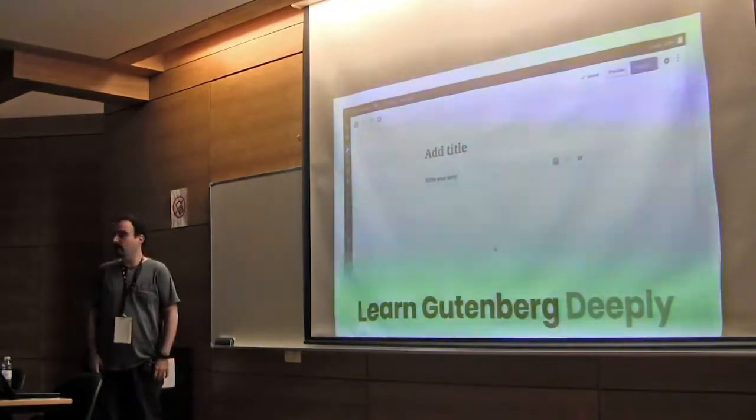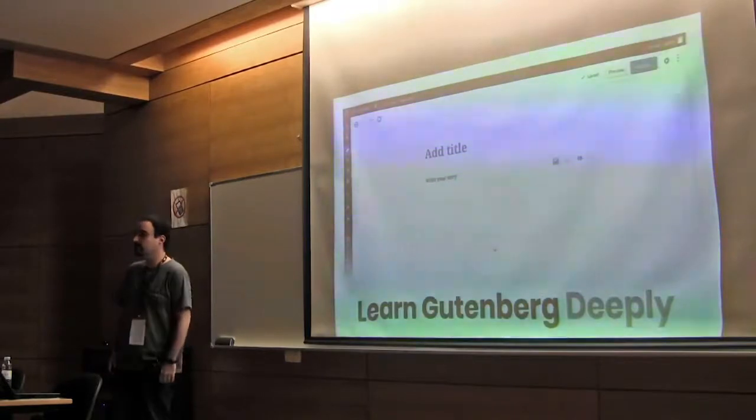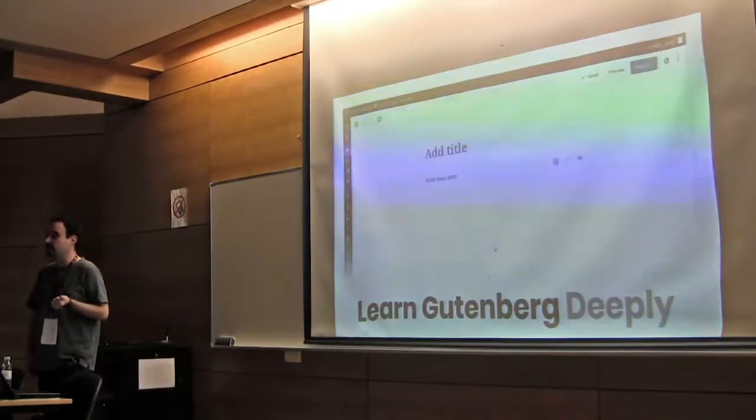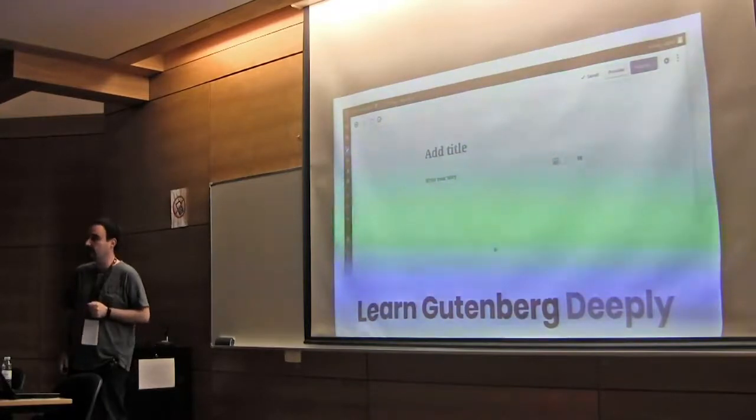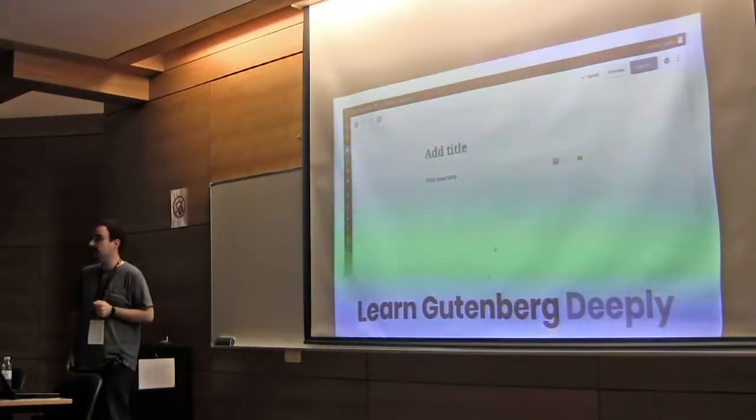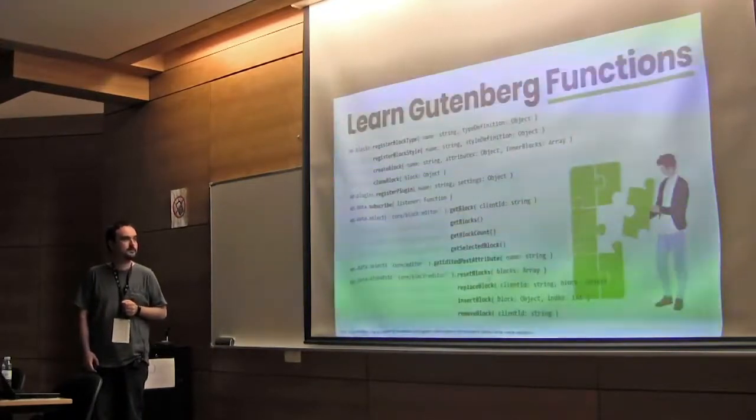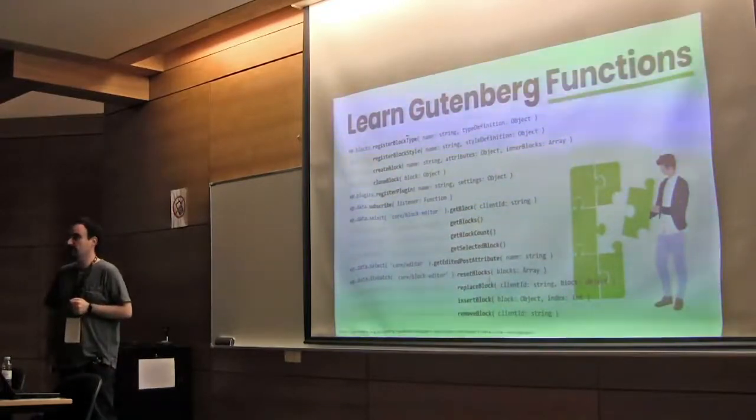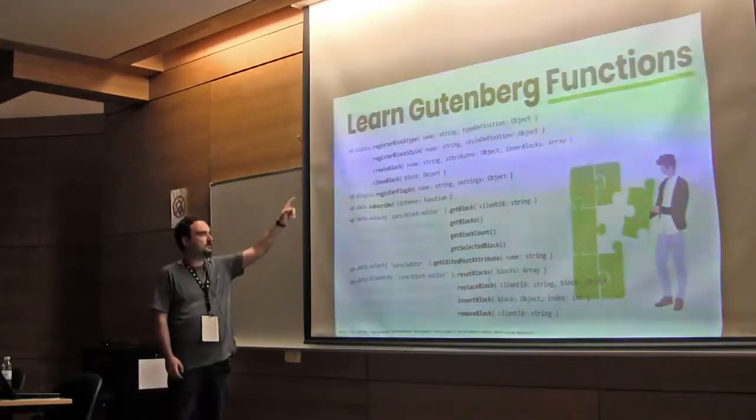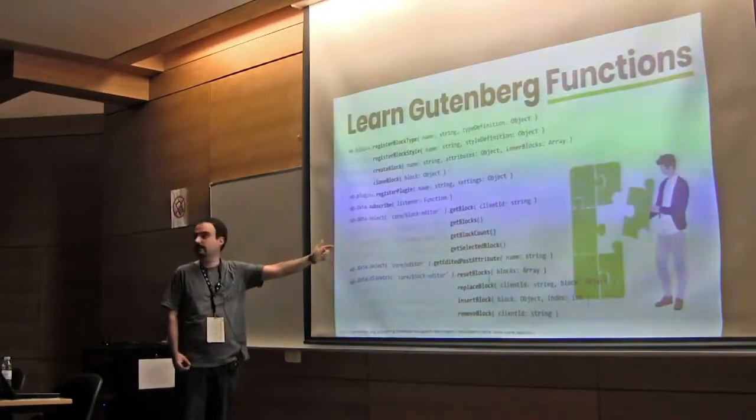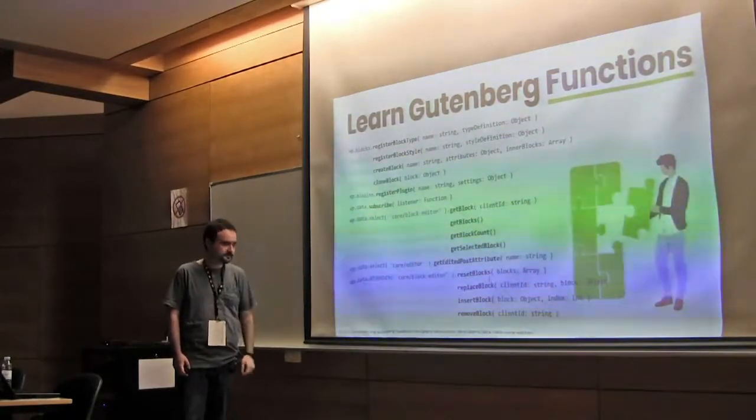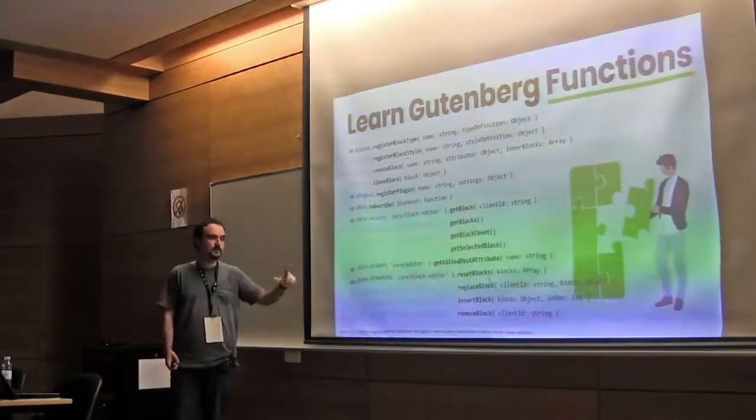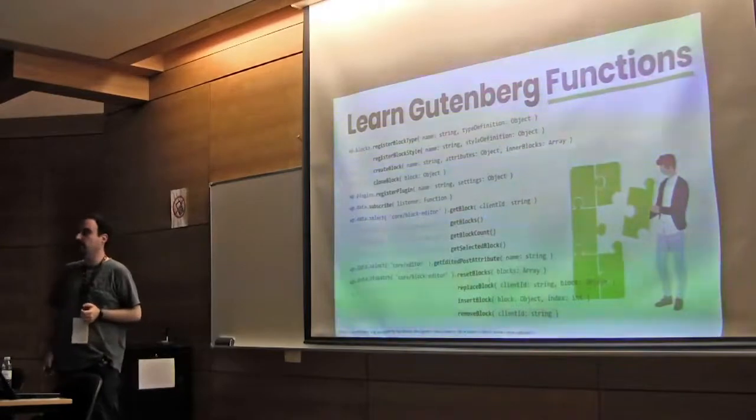And finally, the last final boss that we have here is Gutenberg. So, we have learned how to develop things with a modern build process. We have learned the modern syntax of JavaScript. And we have learned the basics of React. In fact, the way to create components using JSX. How about Gutenberg? Well, Gutenberg provides you with lots of functions that you can use. Functions to create blocks, to clone blocks, to get the blocks that are in the editor. To get attributes of the post that is being edited. To reset the blocks, to eliminate everything. To replace a block, insert a block, remove a block. So, you can do programmatically everything that you might know.